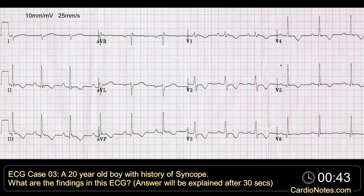A 20-year-old boy with history of syncope came with this EKG. Try to spot the findings in his tracing and make a diagnosis. The answer will be explained after 30 seconds.